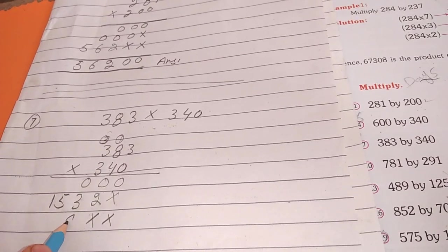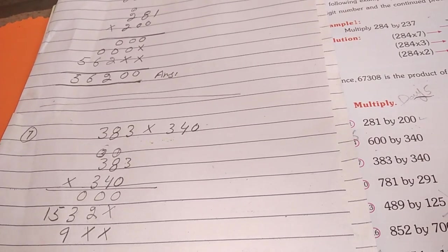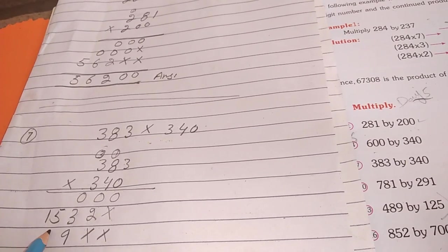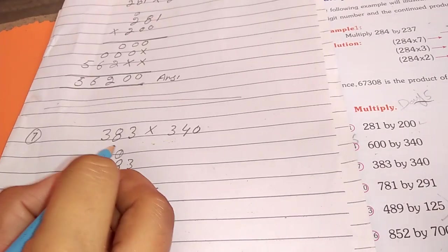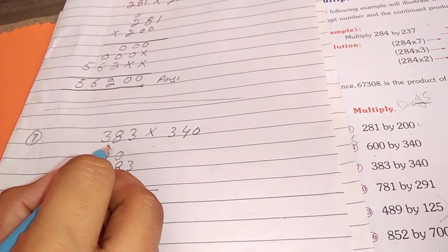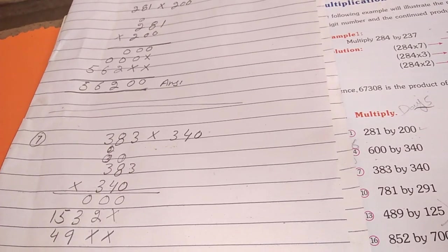Now, 3 times 3 is 9. 3 times 8 is 24. 24, there will be 4, and 2 will be carried on. 3 times 3 is 9.